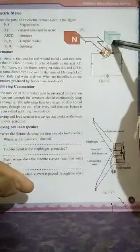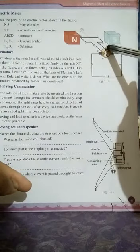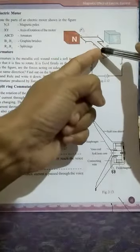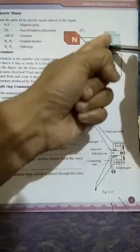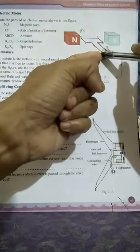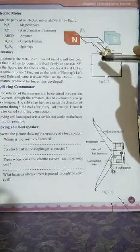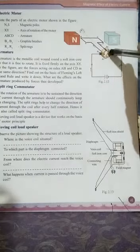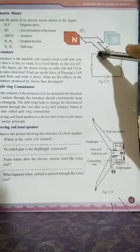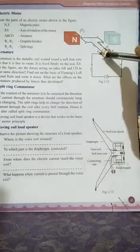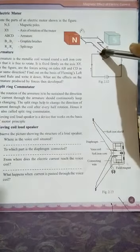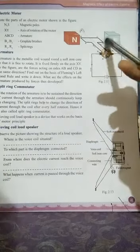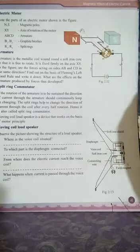The armature rotates within the field. As it rotates, the brushes remain stationary but stay in contact with the split rings. After half a rotation, brush B1 comes in contact with R2 and brush B2 comes in contact with R1 — the rings swap contact positions. This means R2 becomes positive and R1 becomes negative, so the direction of current in the coil reverses in the second half of rotation, allowing the armature to complete a full continuous rotation.